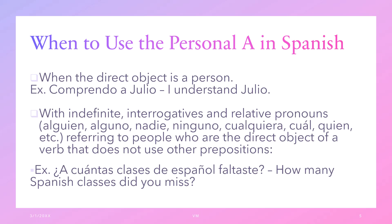The Personal A is also used with indefinite, interrogative, and relative pronouns, such as alguien, alguno, nadie, ninguno, cualquiera, cual, quien, etc. It is also used when referring to people who are the direct object of a verb that does not use other prepositions. For example, '¿A cuántas clases de español faltaste?' — How many Spanish classes did you miss?